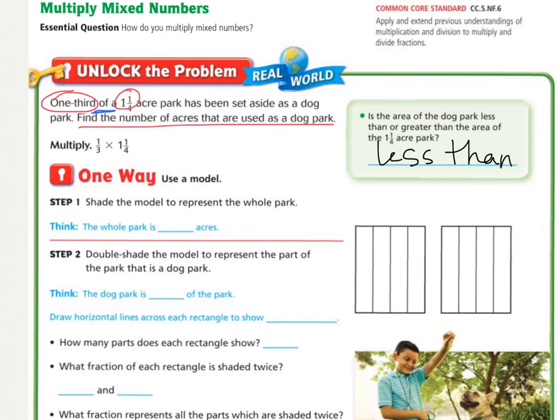This way is a review. So the first step is to shade the model to represent the whole park. And the whole park was one-and-one-fourth acres. So go ahead and shade one-and-one-fourth acres, or one-and-one-fourth of this rectangle and this rectangle. Right there, I shaded in one whole rectangle, and then one of the four.